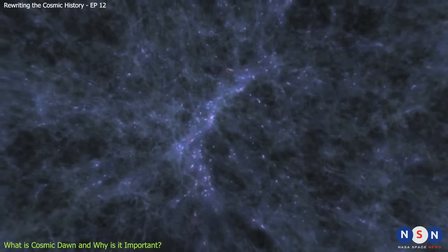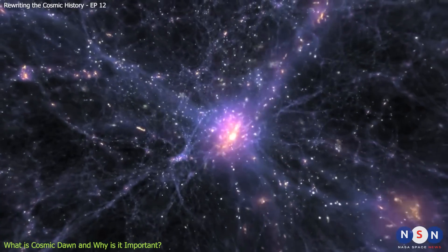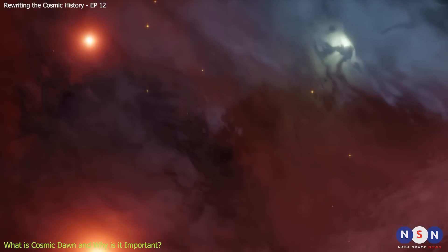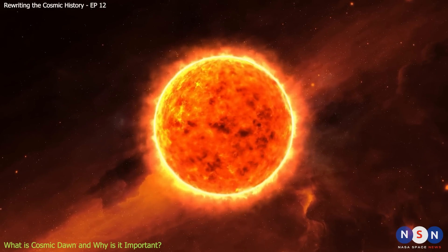But this darkness didn't last forever. Eventually, some clouds of gas became denser and collapsed under gravity to form the first stars and galaxies. These objects were very different from what we see today. They were much bigger, hotter, and shorter-lived than modern stars.